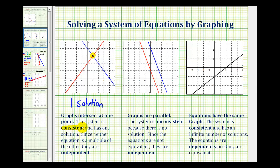This type of system is consistent, and the equations are independent. If we graph the two lines and they're parallel, there's no points of intersection, therefore there's no solution. The system is inconsistent, and the equations are independent.